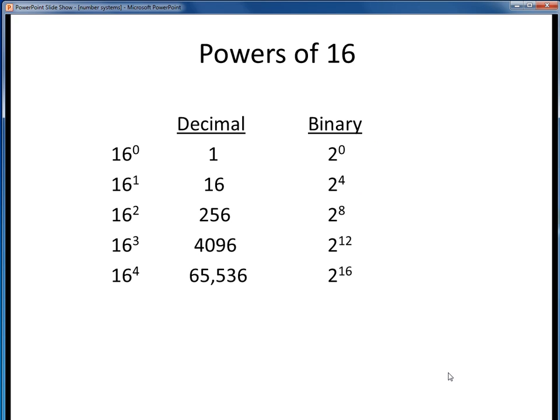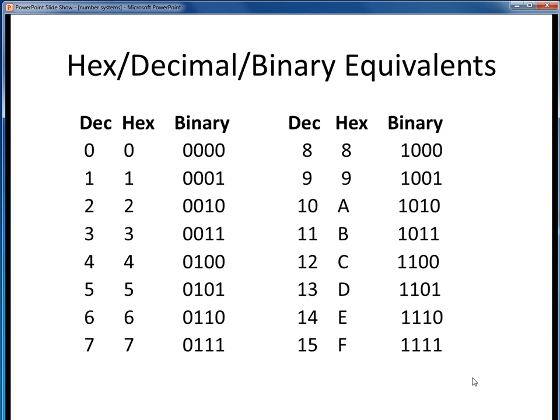Here's another useful table to have in your back pocket. This one shows the first few powers of 16. You can see here that as the exponents increase, the decimal values are all increasing by a factor of 16, but the binary numbers are all increasing by a factor of 2 to the 4th, which is 16. This is a really useful table, and you'll definitely want to have this on hand for an upcoming homework assignment.